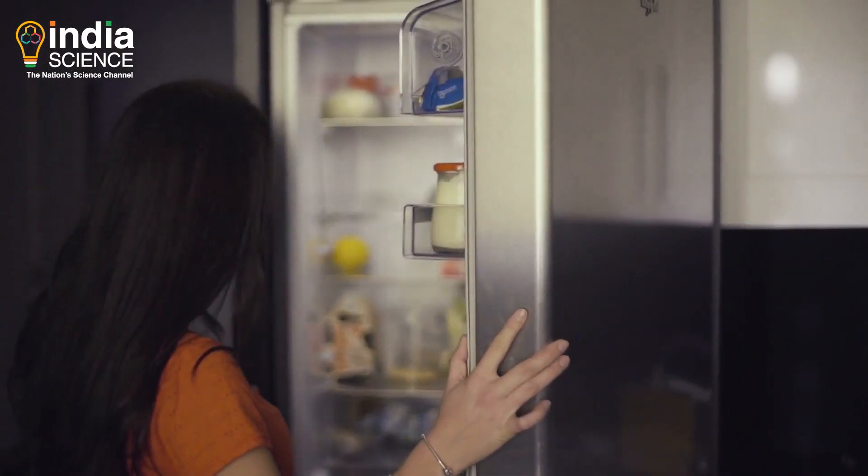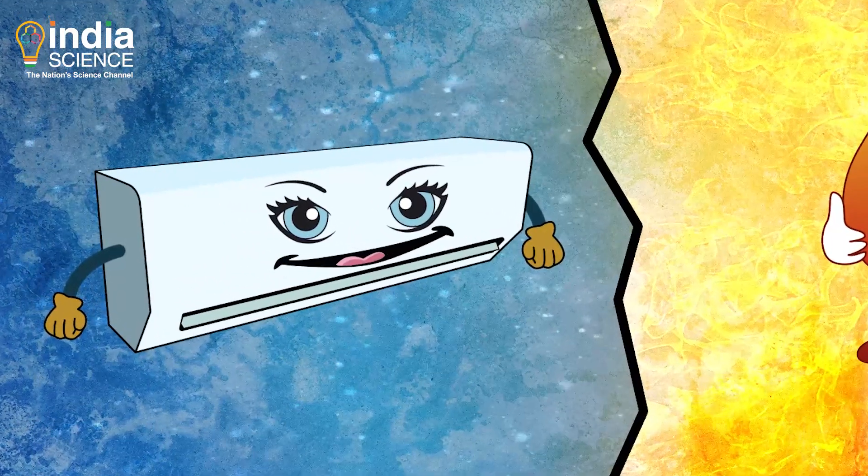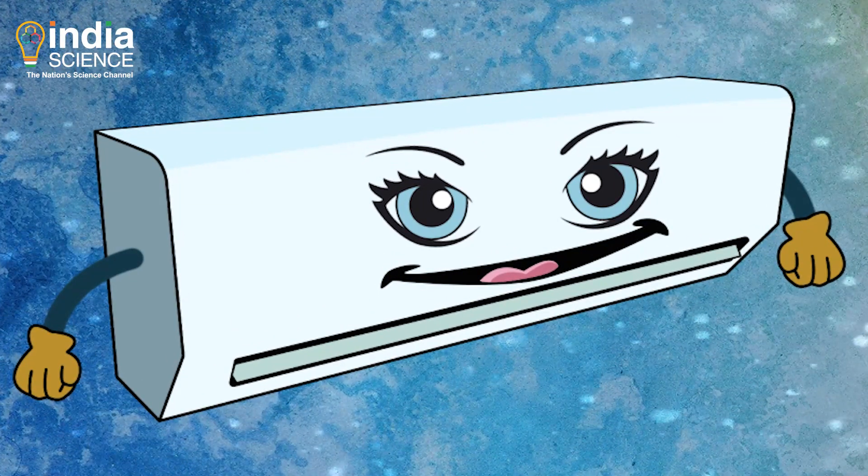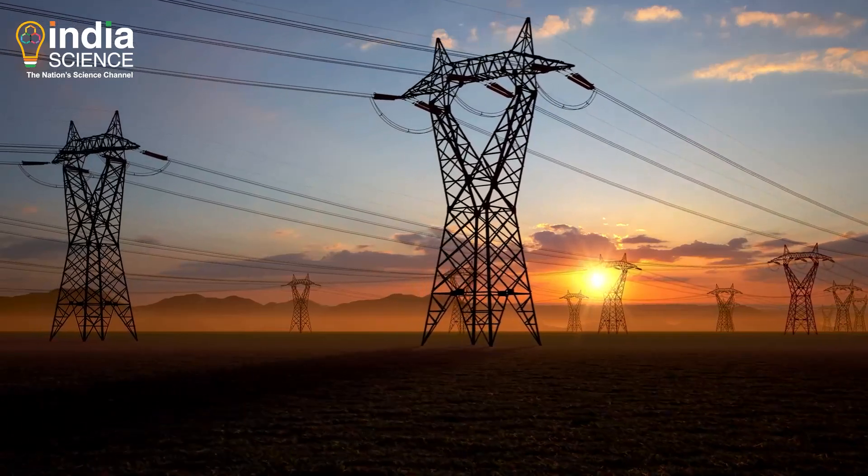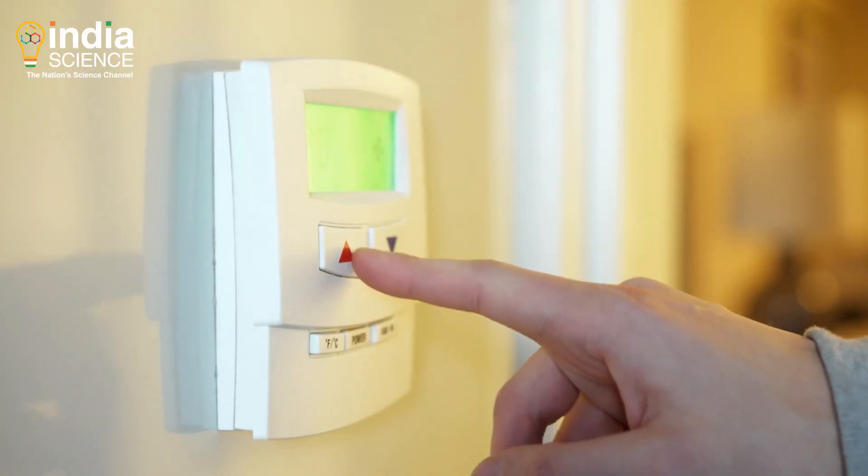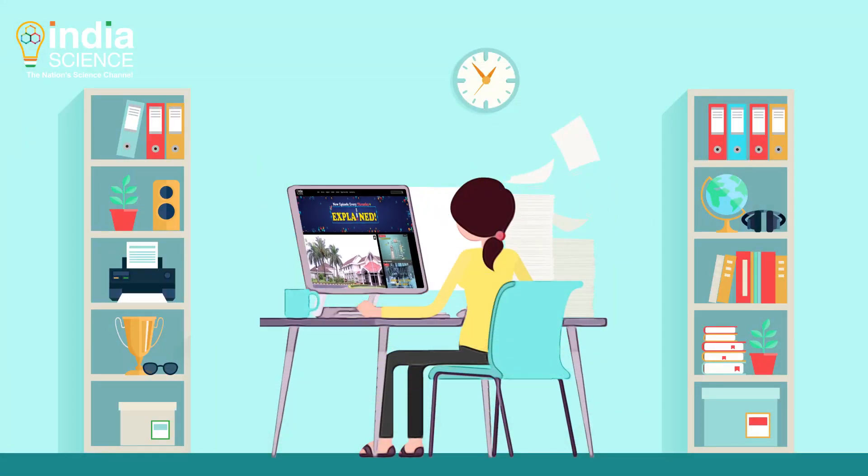The refrigerator in our homes also works similarly. And that's how Miss Chill is able to extinguish the fire of Mr. Hottie. And yes, all of this requires a lot of electrical energy. So, use your air conditioners wisely. That's all in this episode of Explained and don't forget to watch our other videos.